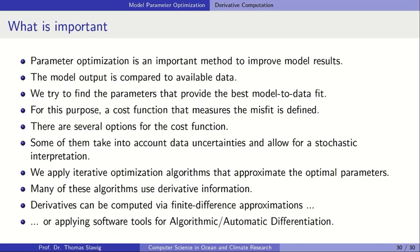So, parameter optimization is an important method: we want to improve model results, and we have data and try to find parameters that provide the best model-to-data fit. We define cost functions — there are different forms — which can be interpreted stochastically by assuming the data are normally distributed with uncertainties in the form of variances and covariances. For the optimization, we usually apply an iterative algorithm that approximates the optimal parameters using derivative information. The main two methods to compute these derivatives are finite difference approximation or exactly, using software tools for automatic differentiation.